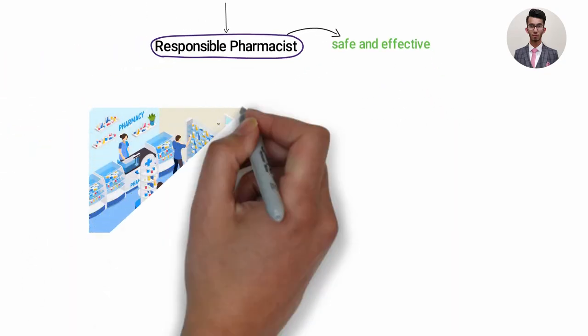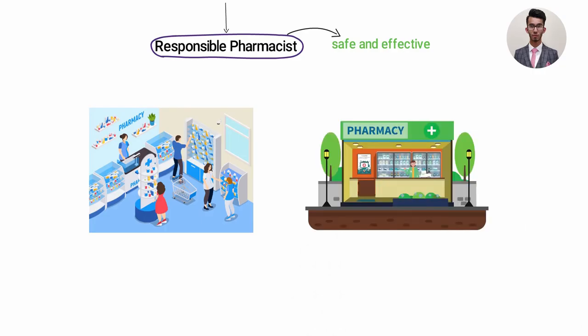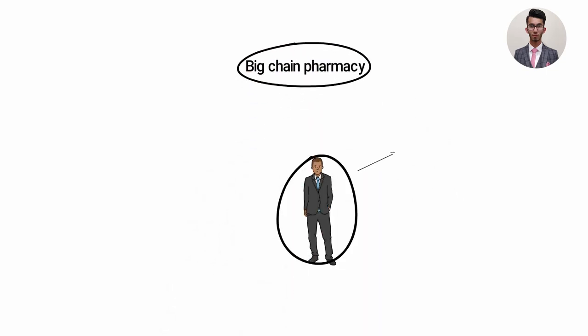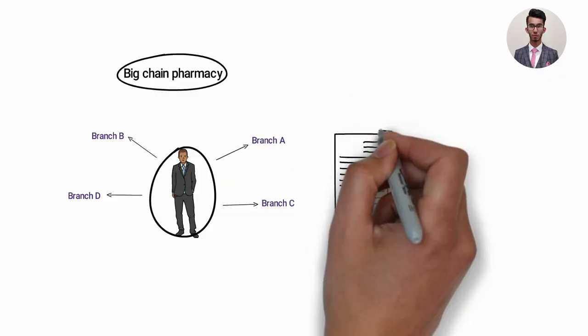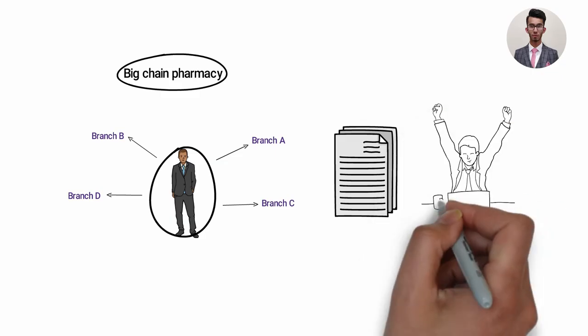Above the RP, then we have the superintendent pharmacist. For small independent pharmacies, usually the RP and the superintendent is the same person, but for big chain pharmacies like your Boots and Lloyds, you have a superintendent pharmacist who is responsible for a few branches and tends to deal with more of the paperwork side of things. It's more of an office job, sitting behind a desk kind of role.